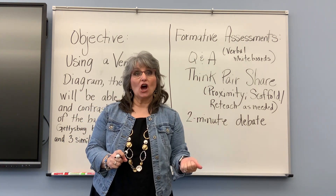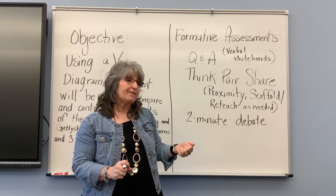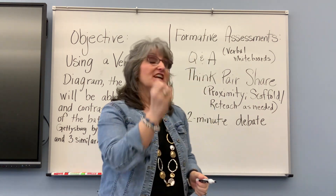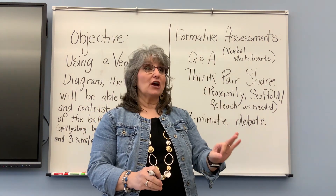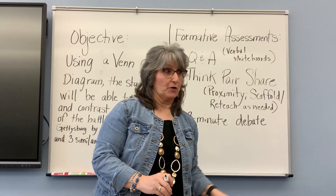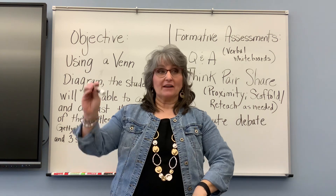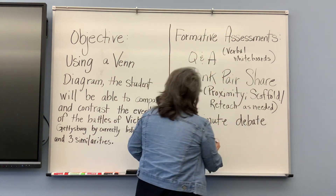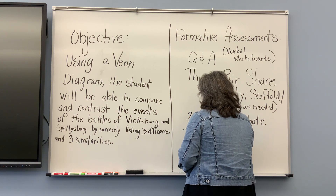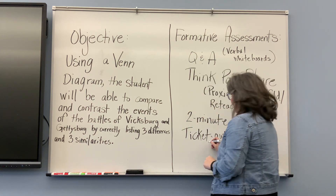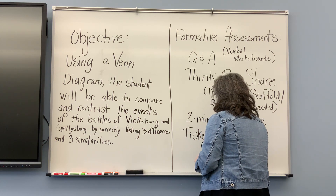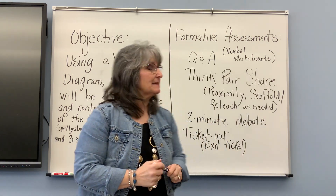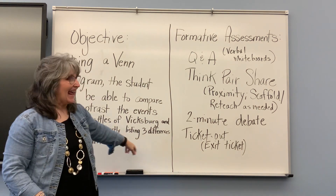All of this good teaching and formative assessment is going to lead to my students having the knowledge to come up with three similarities and three differences between Gettysburg and Vicksburg. That's going to be the ending — this could be their ticket out, their Venn diagram. Sometimes we call this an exit ticket, which means everything is over — this is the independent practice — and that's what the students will leave with.